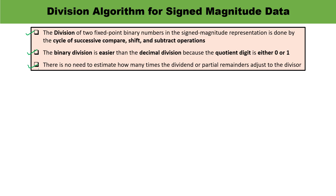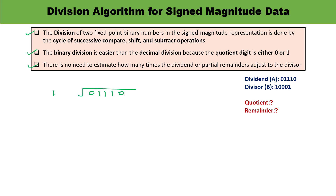Let me tell you how it is performed with paper and pen. You have dividend A which is 01110 and divisor B which is 1001. You have to perform the operation A divided by B, meaning 01110 is divided by 1001. You compare the dividend and divisor — here A is less than B, so the quotient bit will be 0; otherwise it will be 1. Since A is smaller than the divisor, the quotient is 0.